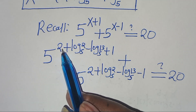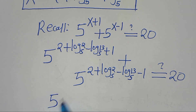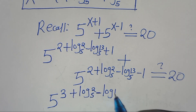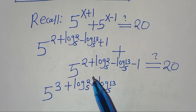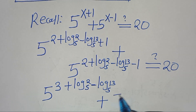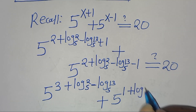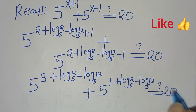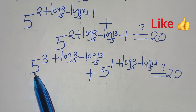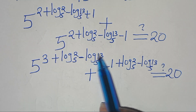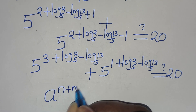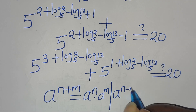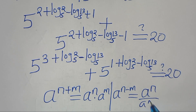The exponent 2 + 1 gives 5 to the power of 3, plus log₅2 minus log₅13. The second term has 2 minus 1, giving 5 to the power of 1, plus log₅2 minus log₅13. These are in the form a^(n ± m), which equals a^n times a^m or a^n divided by a^m. Applying these two exponent properties: